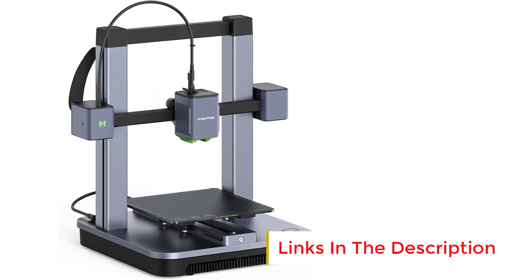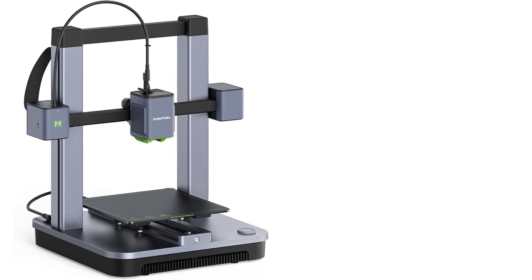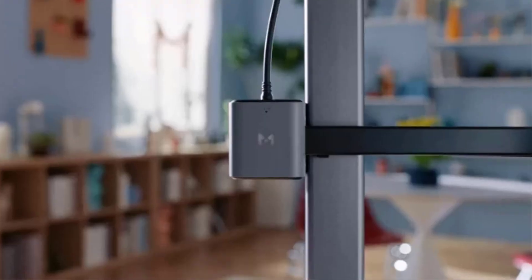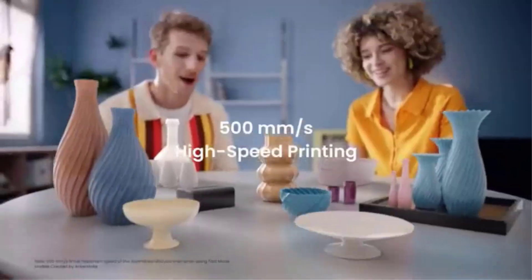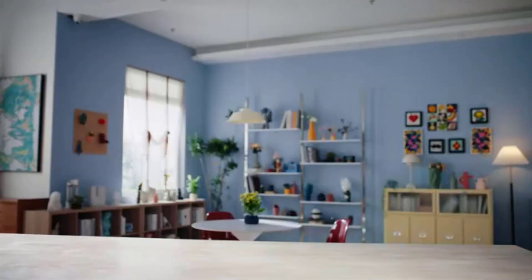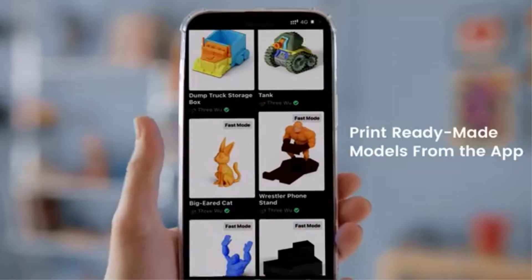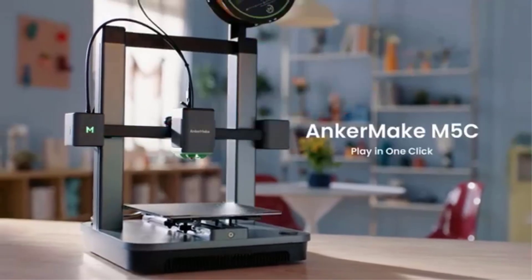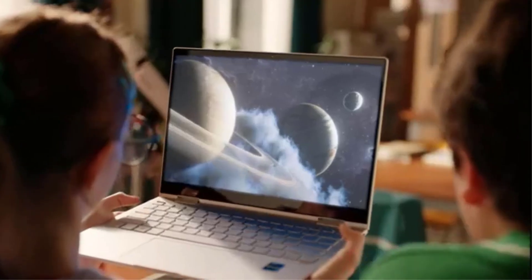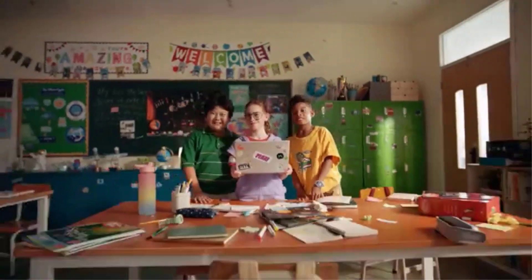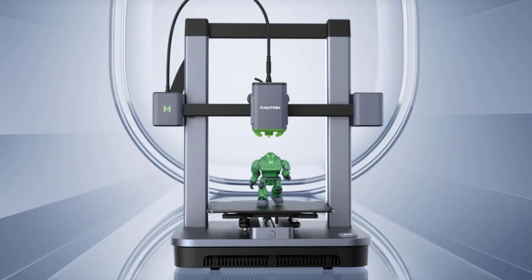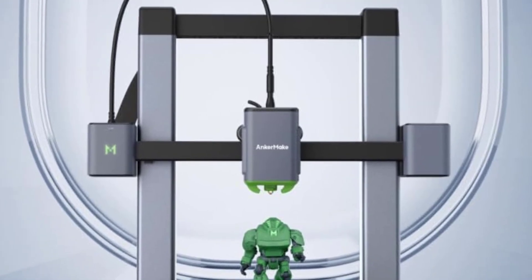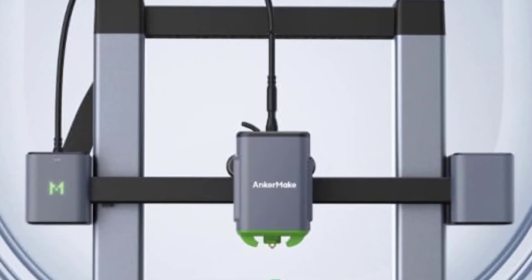A key feature of the M5C is its 7x7 auto-leveling system, which ensures accurate first-layer adhesion and reduces the need for manual calibration. The printer's build volume of 220 by 220 by 250mm provides ample space for a wide range of projects, from small models to functional parts. The multi-device control feature enhances usability, allowing users to manage prints via a smartphone, tablet, or computer, making remote operations seamless. The intuitive user interface simplifies navigation, making it ideal for beginners while still offering advanced settings for experienced users.